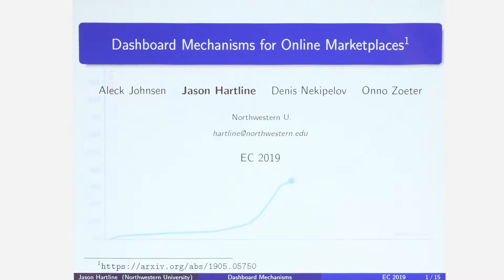If I give the bidders a dashboard, bidders can easily optimize for this dashboard. And now my mechanism design problem is: how should we design a mechanism that's aware that there is this dashboard that bidders are responding to? What are the things we think about when designing mechanisms in that space?